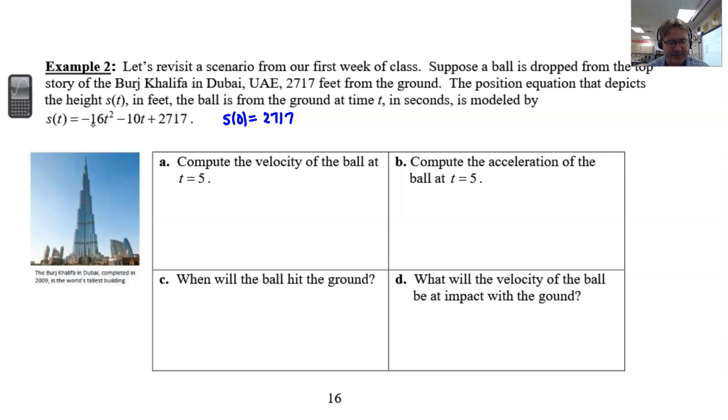Let's take a look at example two part A. Compute the velocity of the ball at time 5. This is where we had a discussion at the beginning of the course that if we took a derivative we could freeze time. We didn't know how to take a derivative on the first day, but now we can. The velocity is the first derivative of position, so we get v(t) = -32t - 10.